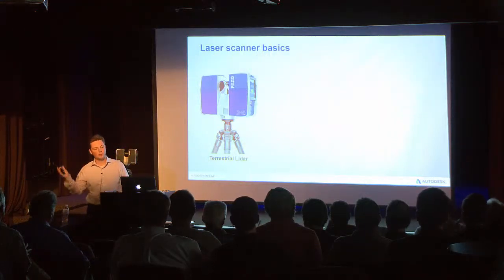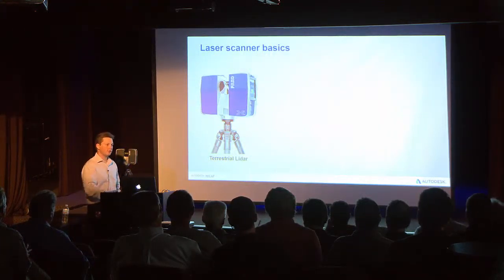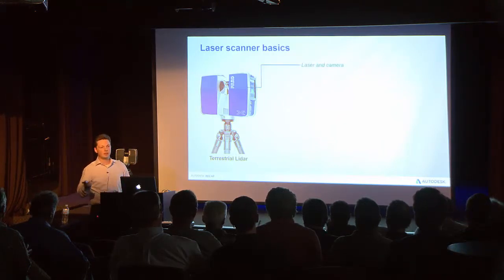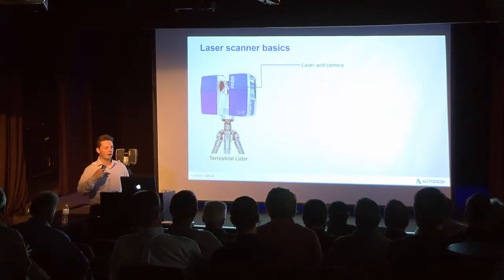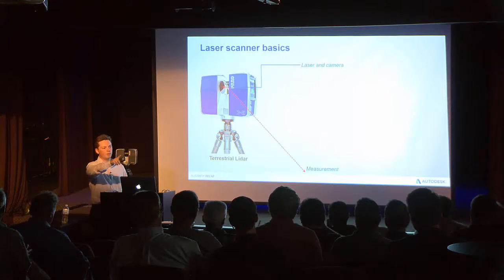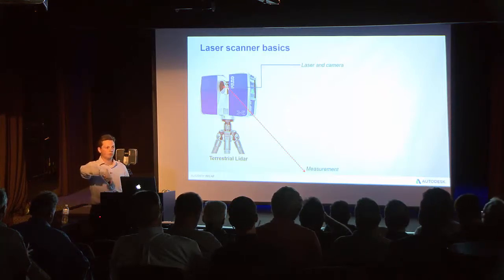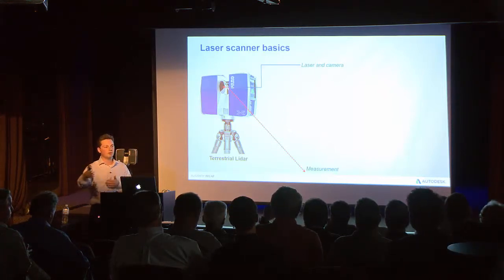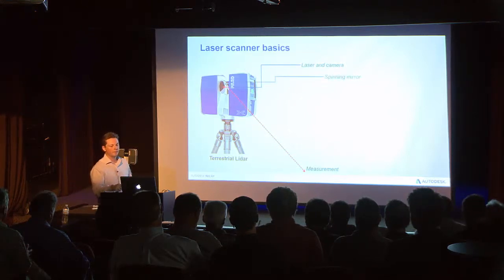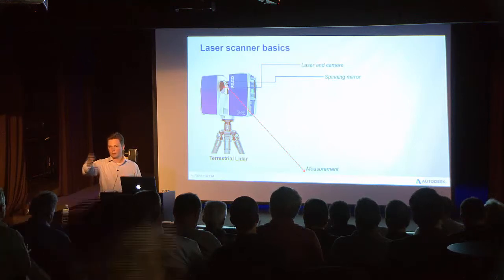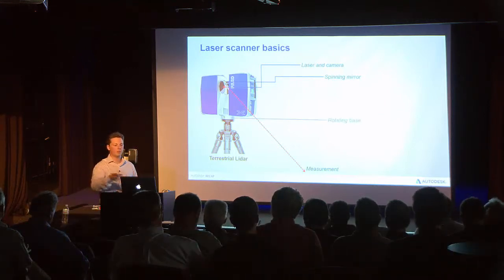On the far end of the spectrum we have terrestrial laser scanning. The basics: you've got a scanner and sometimes a camera embedded with it. A measurement is taken by emitting a beam of light from the laser and recording either the phase of which it comes back or the amount of time it takes. By spinning it you get 180 degrees of measurements, and by spinning the whole thing around you get a whole sphere.